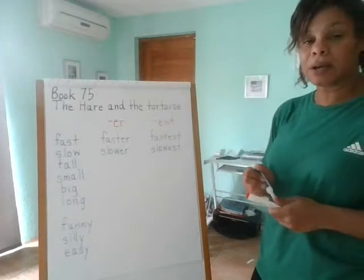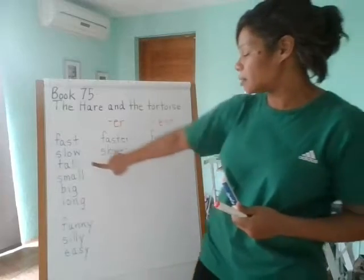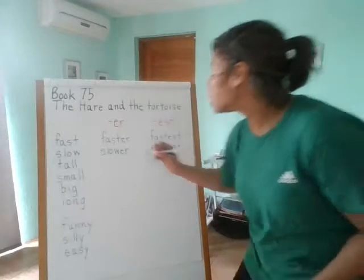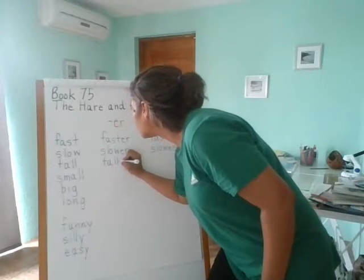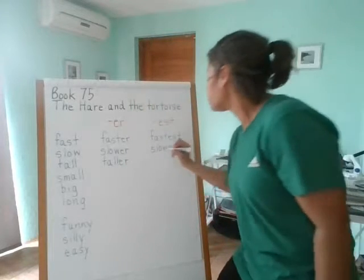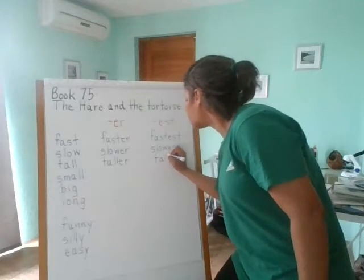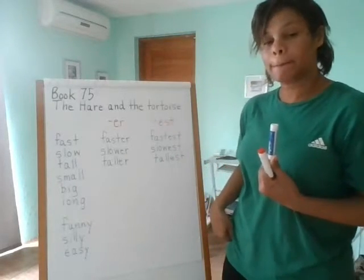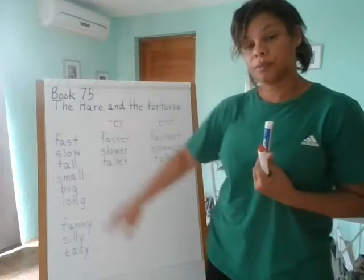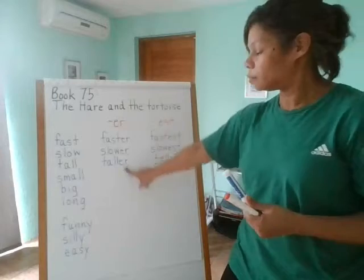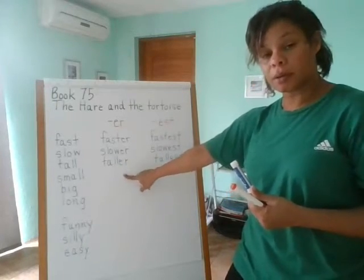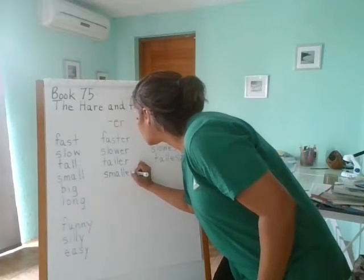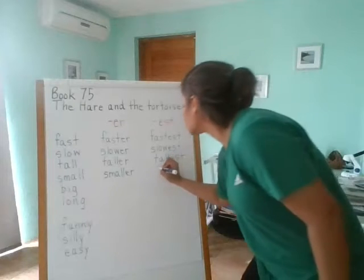Pause to write that down. Next, the word is tall — no change in the spelling. It becomes taller, or one child might be the tallest. Next word: small. What should go here? Smaller. And over here: smallest.